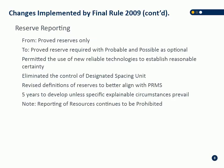They permitted the use of new reliable technologies to establish reasonable certainty. Previously, companies were not allowed to book reserves for enhanced recovery projects in the proved category unless they had a successful pilot in the subject reservoir. They eliminated the concept of designated spacing units — it was very strict what you could book for undeveloped reserves in the U.S., with very short distances from existing production permitted. With the advent of resource plays, they realized the definitions were too strict and relaxed it, moving to larger designated spacing units, giving evaluators more leniency to book reserves further from existing production where reasonable.